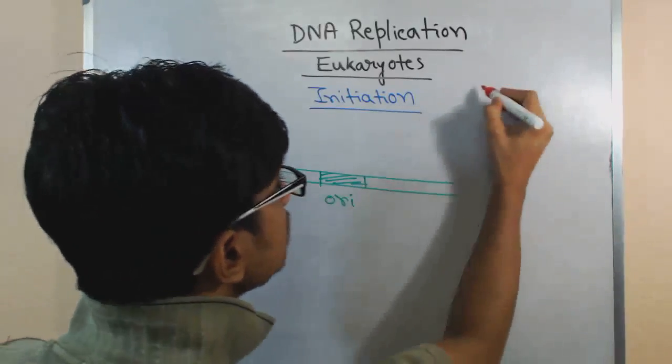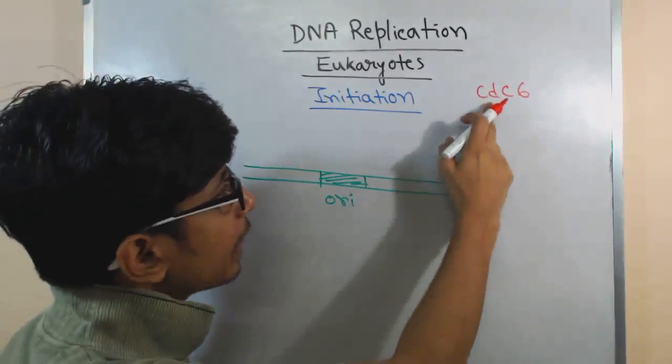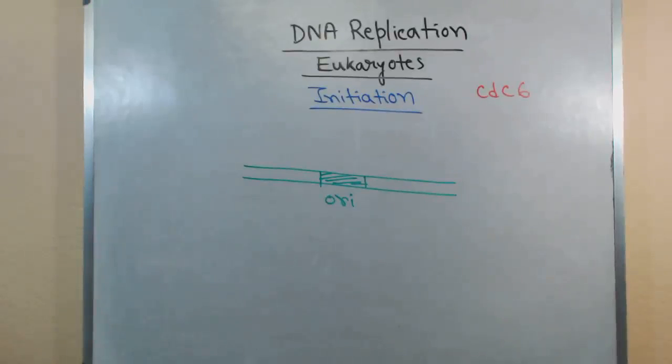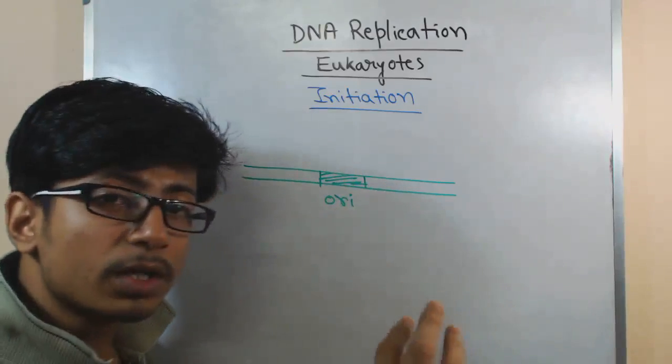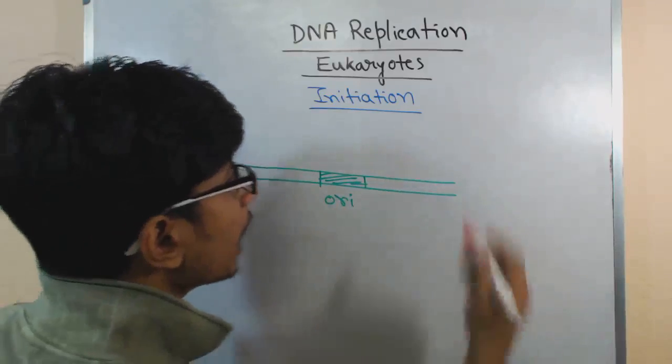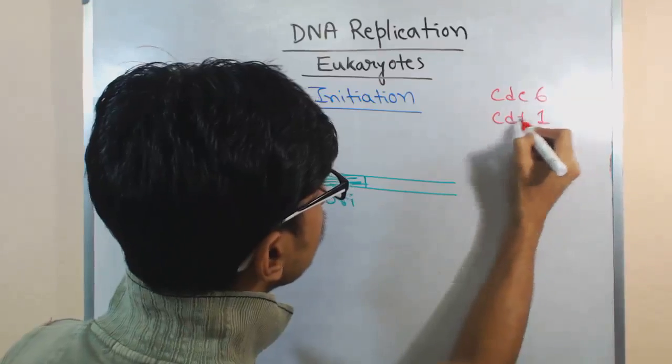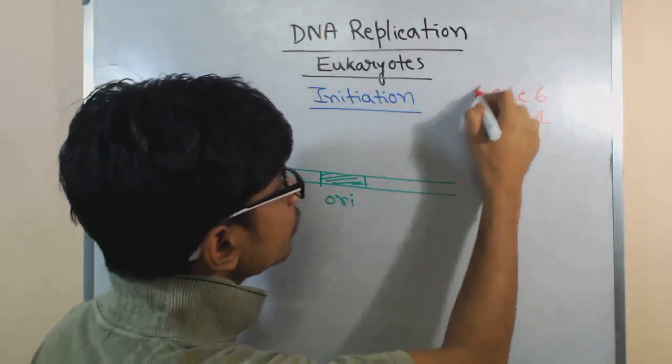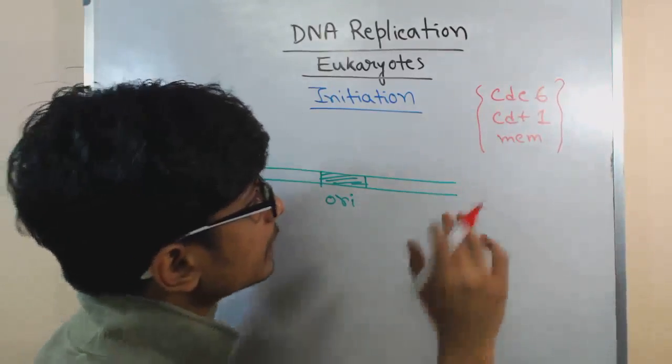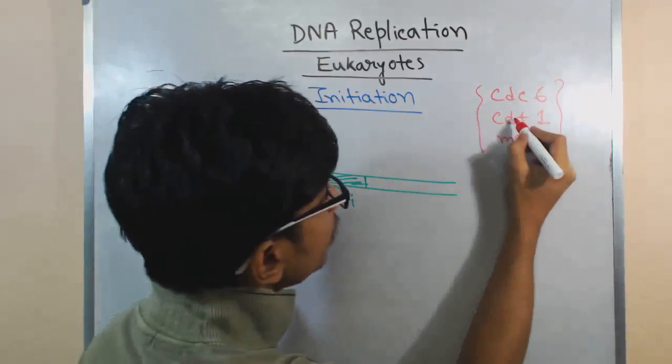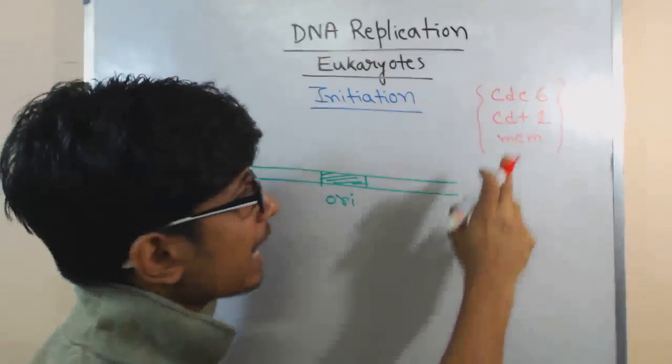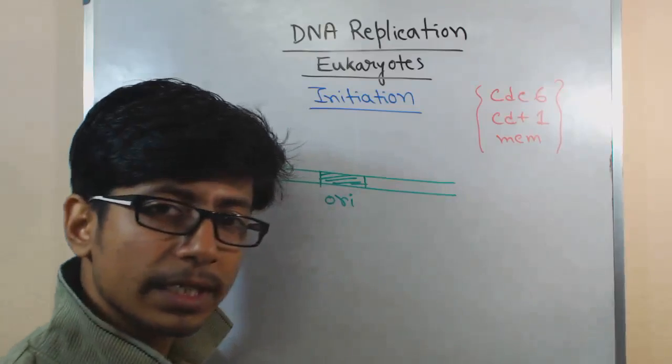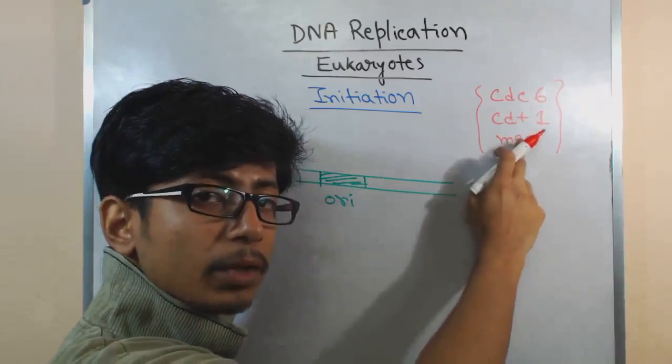The major DNA replication activator proteins in eukaryotes are CDC6, CDT1, and MCM. The full forms: cell division cycle protein is CDC6, this is called chromatin licensing and DNA replication factor 1, and MCM is mini chromosome maintenance factor.